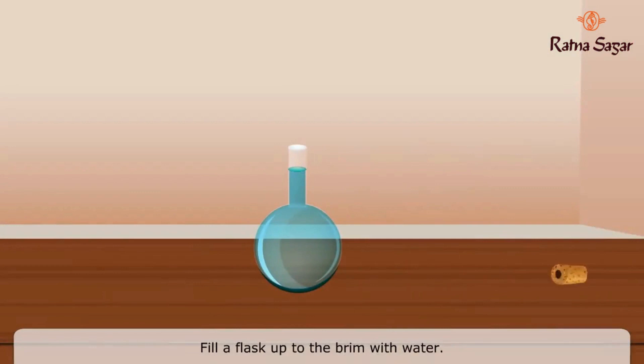Fill a flask up to the brim with water. Take a rubber cork with a hole in it and insert a narrow tube into the hole. Fix the cork firmly in the mouth of the flask. The liquid will rise a little in the tube. Note the level of the liquid. Heat the liquid.